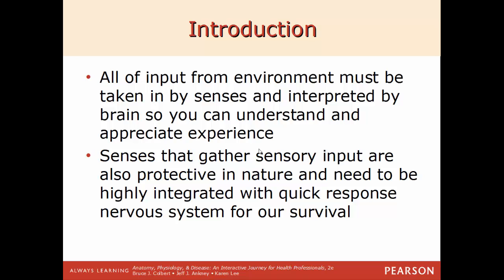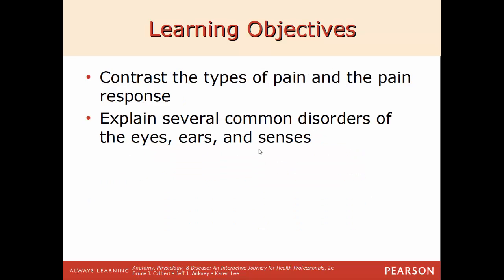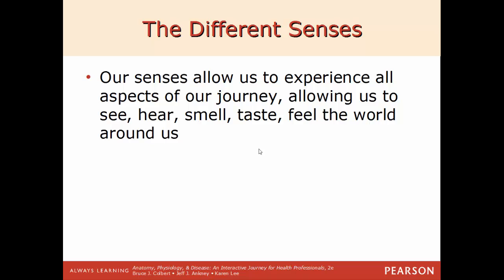Your senses are also protective in nature, so you're able to quickly interpret information and adapt or interact accordingly — for example, seeing a car coming toward you, you'll know to get out of the way. Learning objectives for this chapter: differentiate between general and special senses; describe the internal and external anatomy and functions of the eye and ear; discuss the processes involved with taste, smell, and touch; contrast the types of pain and the pain response; and explain several common disorders of the ears, eyes, and senses.